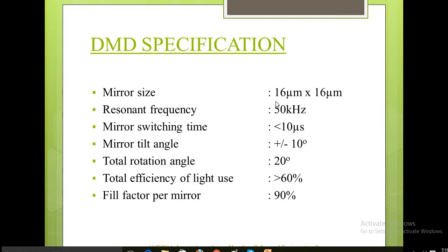DMD specifications: the mirror size is 16 micrometers by 16 micrometers, resonant frequency 50 kilohertz. Mirror switching time is less than 10 microseconds - that is very fast switching. To produce gray scales, the mirror is toggled on or off very fast, taking less than 10 microseconds to switch between on or off position toward the dark or bright pixel.